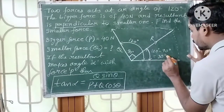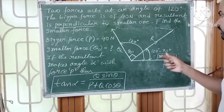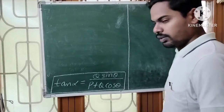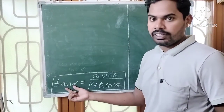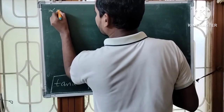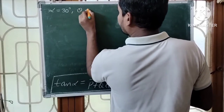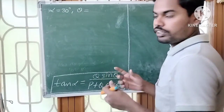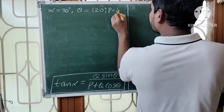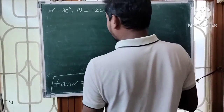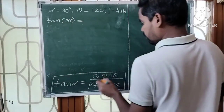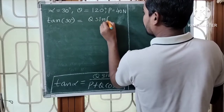Here alpha equals 30 degrees — that is the angle between the resultant and the horizontal force P. Using this formula, tan alpha equals Q sin theta divided by (P plus Q cos theta). Here alpha is 30 degrees, theta is the angle between the two forces which is 120 degrees, and P equals 40 Newtons.